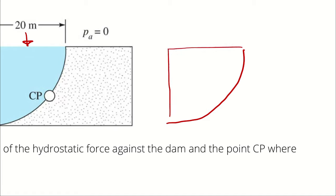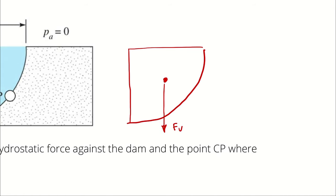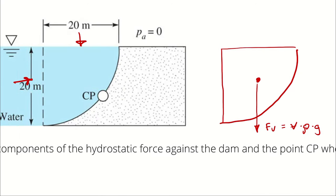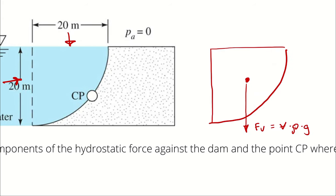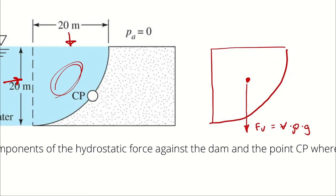The vertical component of the weight acting on the dam is just the weight of the water — the volume multiplied by the density multiplied by gravity. The volume of this water multiplied by the density of that water times gravity yields the weight of the water in this region, which represents the vertical component of the force acting on the dam.